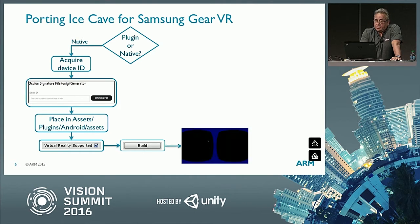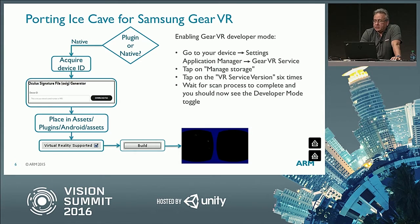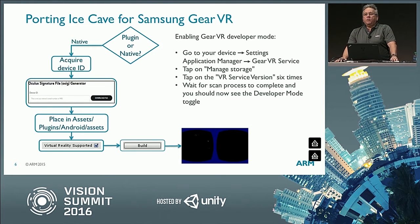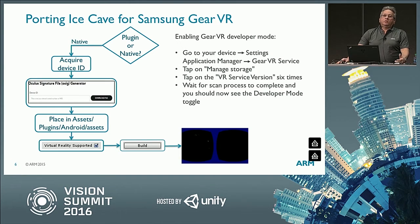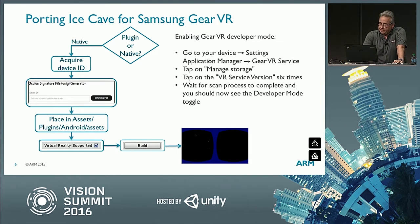We followed those steps and this is what we got at the beginning - just a black screen. The point is that our original demo was using a custom resolution, and in Unity VR you can't use a custom resolution, at least not so far. I remember that at that point it was really useful to use the Gear VR developer mode - you can enable it on your phone and then run your application without inserting it in the Gear VR headset, especially at the beginning when you are just trying and making a lot of tests. So it is very useful. We solved the problem and got our demo running in VR.